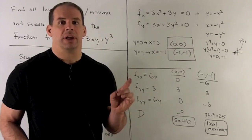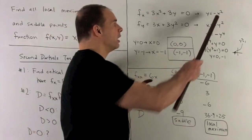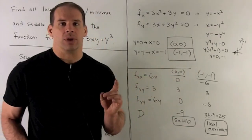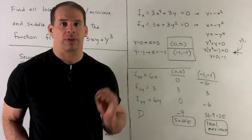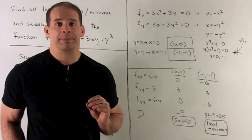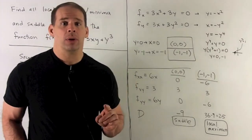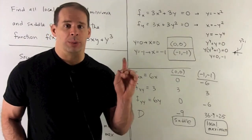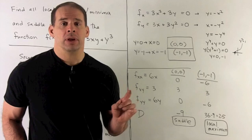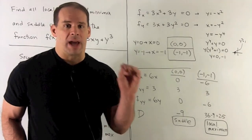I substitute x into here, and I get y equals minus y to the 4th. Move the y to the 4th to the other side. I can factor a y out. So, we'll have y equals 0. Then, we need to know when y cubed plus 1 is equal to 0. So, one solution there is minus 1.